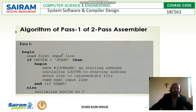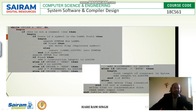Then read the next input line and handle the end of START. If the opcode is not equal to START, then we should initialize the location counter with value 0. Next, we should process operations until we reach the opcode equal to END.